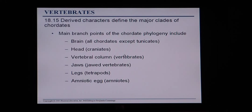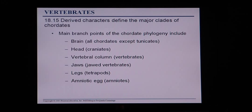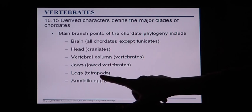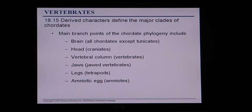Vertebrates have a vertebral column — a backbone — and they also have a brain, head, vertebral column, jaws, legs, and amniotic eggs. The brain of course is the large sense organ. Many animals we'll be talking about are tetrapods — tetra meaning four, so four-legged animals — and then we would be bipeds, with two legs.